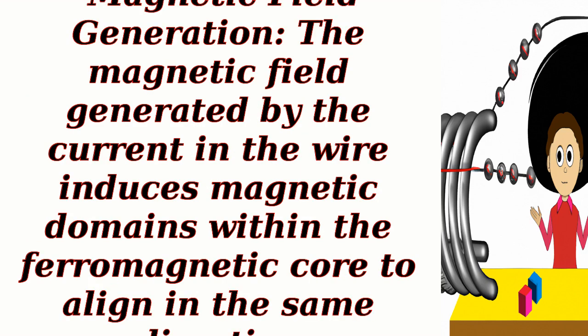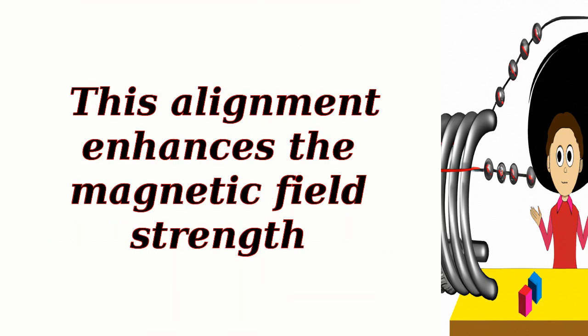Magnetic field generation: The magnetic field generated by the current in the wire induces magnetic domains within the ferromagnetic core to align in the same direction. This alignment enhances the magnetic field strength.